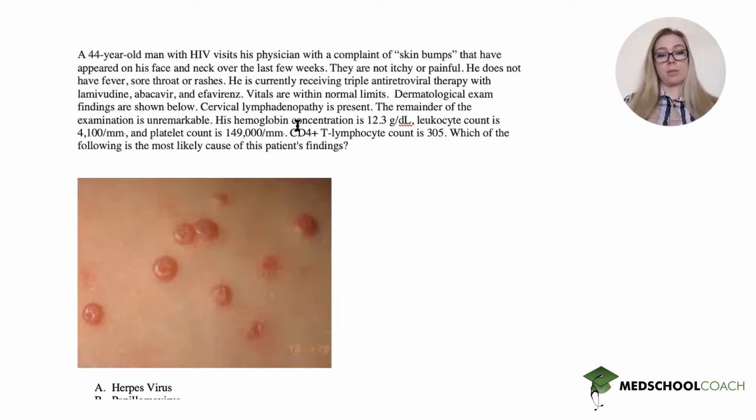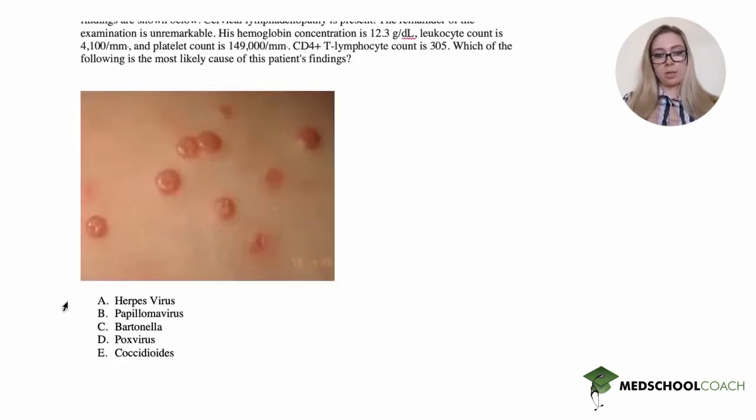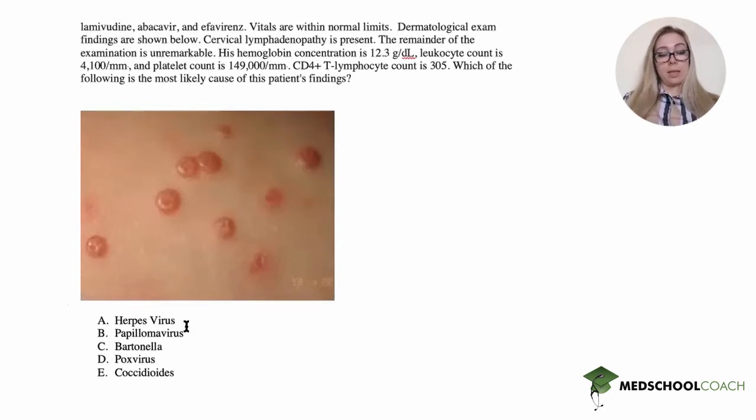CD4 T-lymphocyte count is 305. Which of the following is most likely cause of this patient's findings? Here's the picture, and our options are herpes virus, papillomavirus, Bartonella, pox virus, or coccidioides.